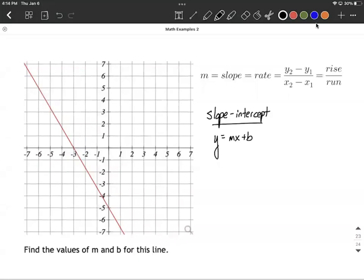Okay, we're given the graph of a line, a linear function. Our goal is to find the values for m and for b for this line. So when we're referring to that m and b, we're thinking slope intercept form, which is y equals mx plus b. M is going to be the slope, and b is going to be the y-intercept.